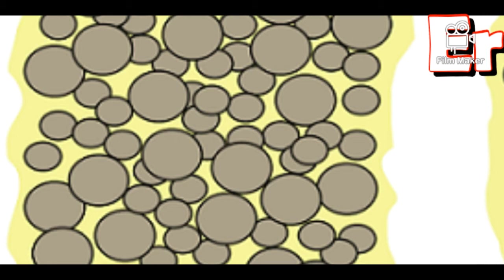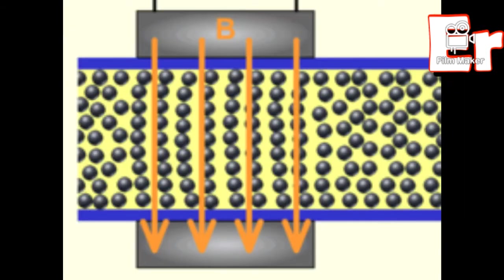Let's check what will happen under the influence of a magnetic field. The iron particles inside the magnetorheological fluid get aligned with each other, and once aligned they mostly behave like a solid. With respect to the strength of the magnetic field, the density of the fluid will vary. By controlling the strength of the magnetic field, we are able to control the solid behavior of the magnetorheological fluid.